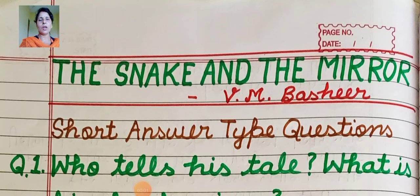A very good morning to all my dear students. Aaj class 10th English chapter name is The Snake and the Mirror, written by V.M. Bashir. Iske short questions padhenge Hindi answer ke saath.